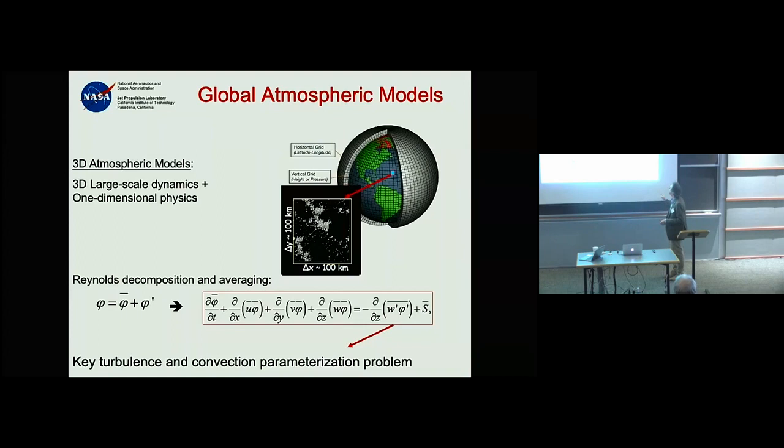In the atmosphere, when we talk about turbulence and convection, the key question is: how do you represent the vertical divergence of this subgrid-scale flow? This is the covariance between vertical velocity and the perturbation of the variable in question.